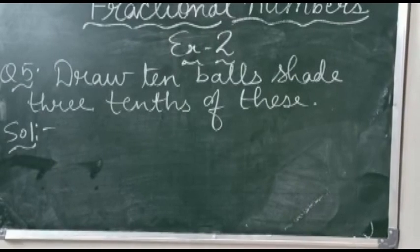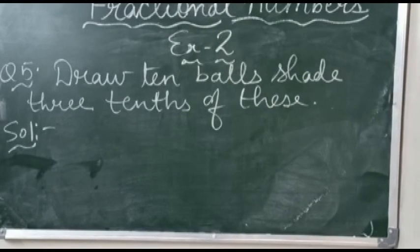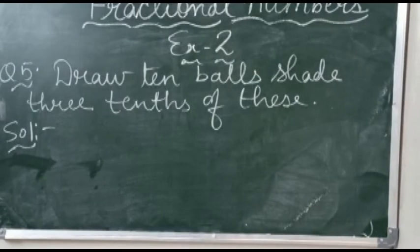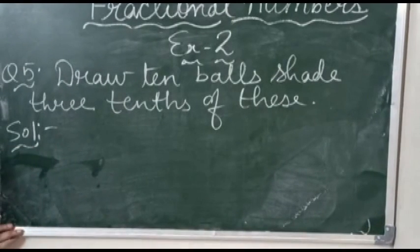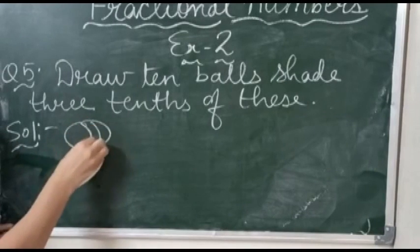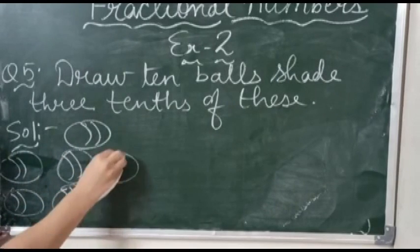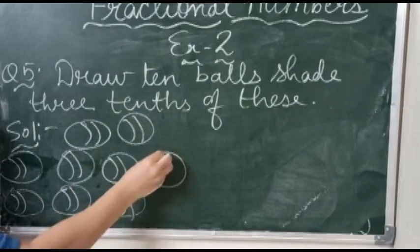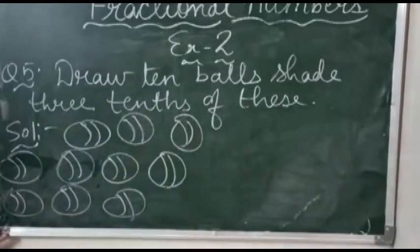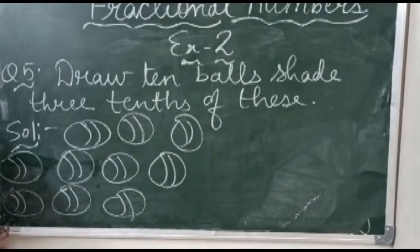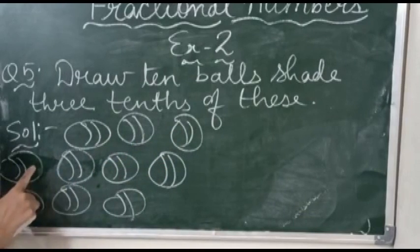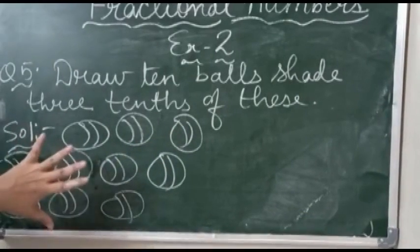Read the question carefully: draw 10 balls and shade 3-tenths of them. In the first step we draw 10 balls. Let's start drawing: 1, 2, 3, 4, 5, 6, 7, 8, 9, 10. There are a total of 10 balls.